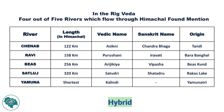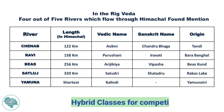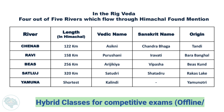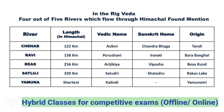Four out of five rivers which flow through Himachal are mentioned in the Rig Veda. These rivers are Chenab, Ravi, Beas, Satlaj, and Yamuna.